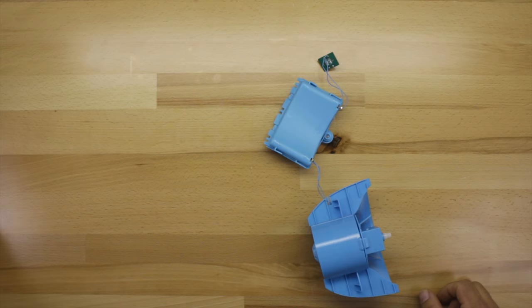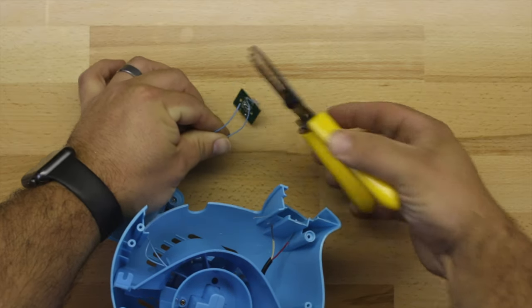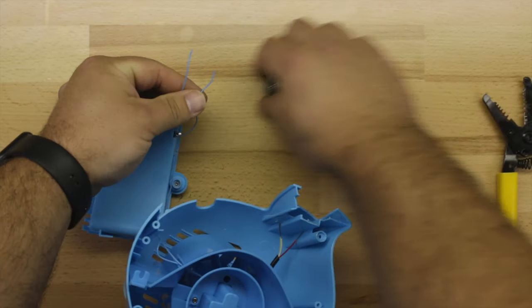Set the housing aside, and now we're going to work on getting our wires prepped for our 3.5mm headphone jack. Go ahead and snip the wires off the circuit board and strip them down.